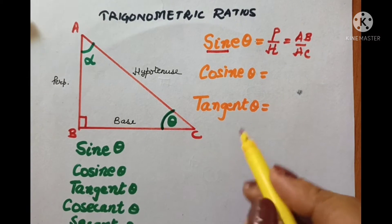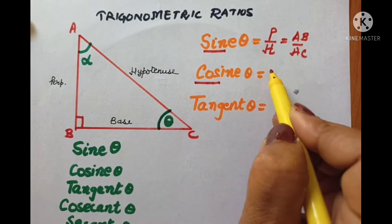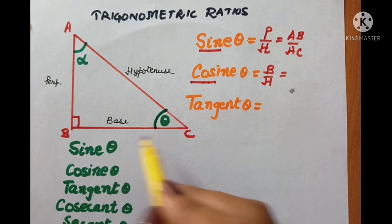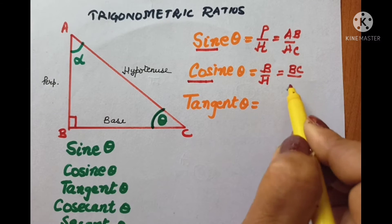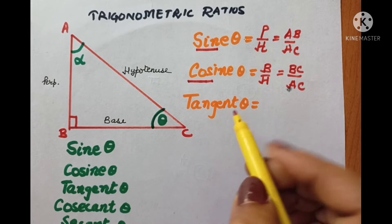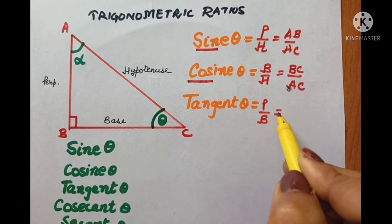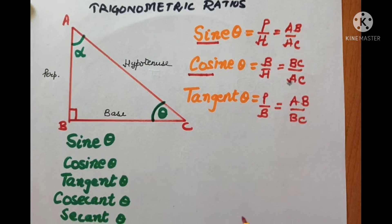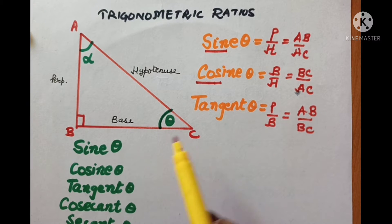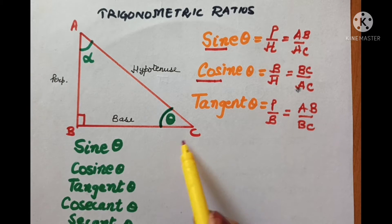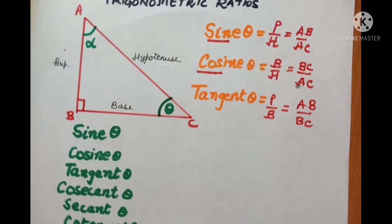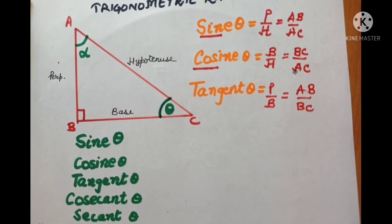The formula for tangent theta is perpendicular upon base — here perpendicular is AB and base is BC. Note that if I consider angle alpha instead, my base becomes AB and perpendicular becomes BC. Now let us concentrate on the formulae of sine theta, cos theta and tangent theta. I am going to tell you the three methods.